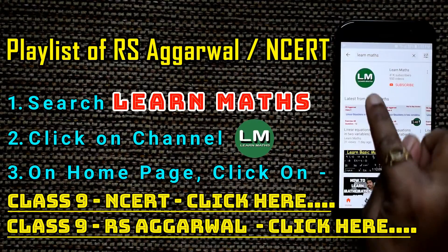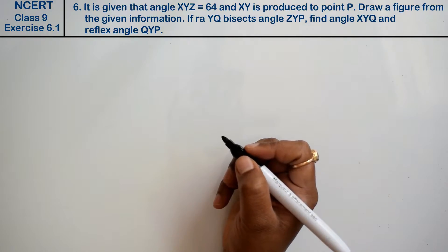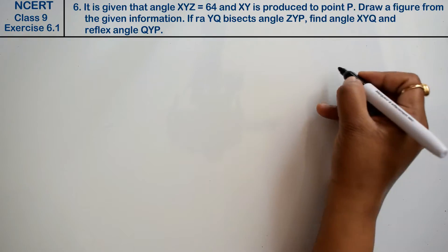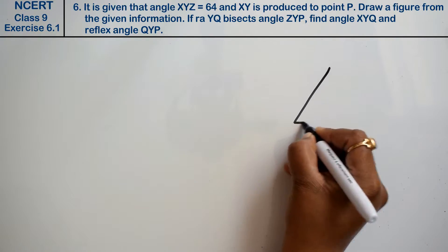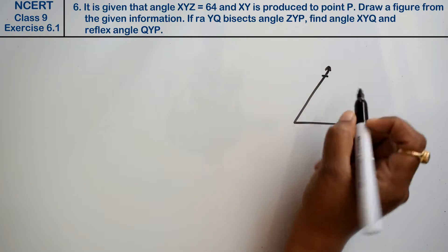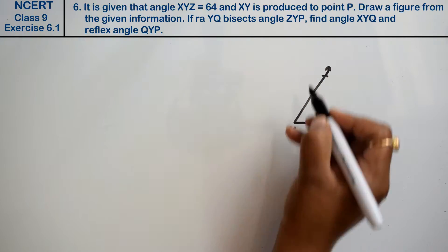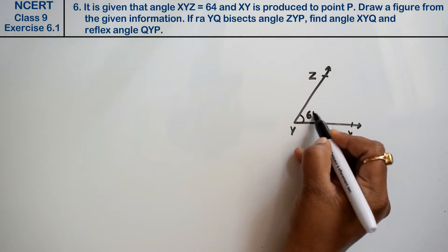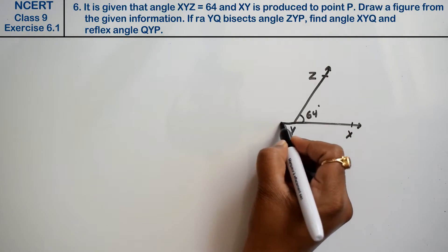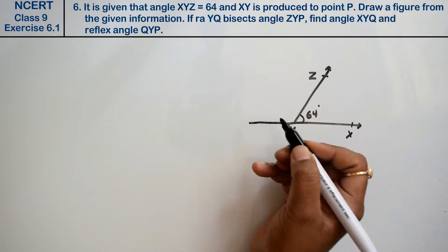Let's do question number six of Exercise 6.1, that is Lines and Angles. Question 6: it is given that angle XYZ equals 64 degrees and XY is produced to the point P. एक angle दे रखा है XYZ, Y बीच में है। XY और Z दे रखा है 64 degree। XY को नीचे लिखा है क्योंकि XY produce किया गया है at point P.